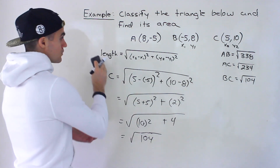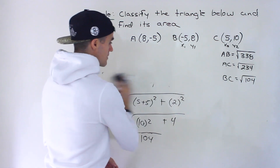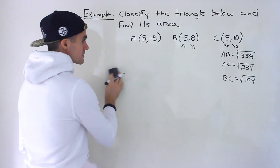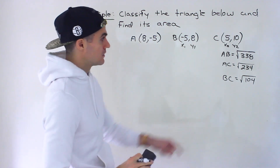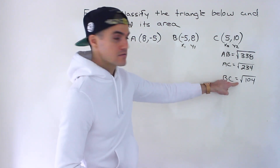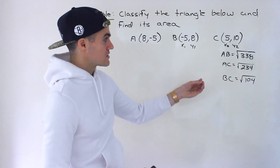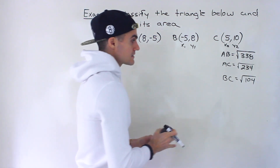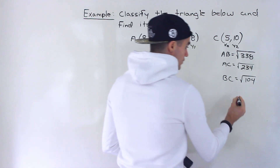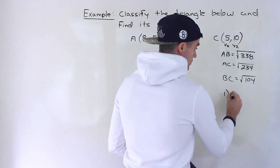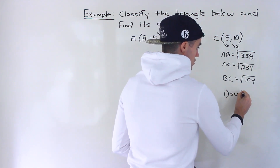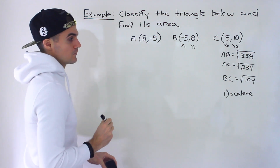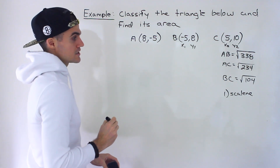And now we can go through that two-step process. The first step: how do the lengths all relate? Notice all of the lengths are different — √338, √234, and √104 are all different. So when a triangle has all different side lengths, you know you're dealing with a scalene triangle. So the first classification: we have a scalene triangle.